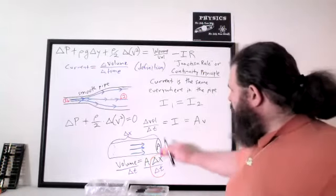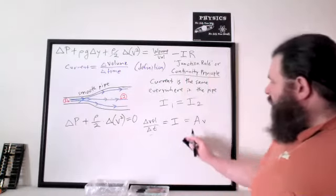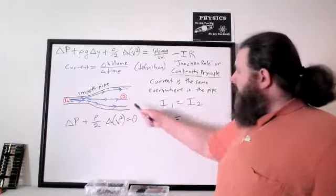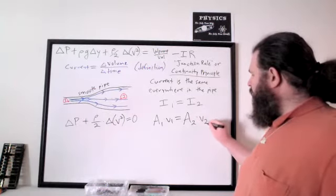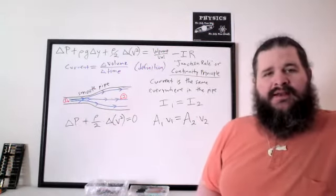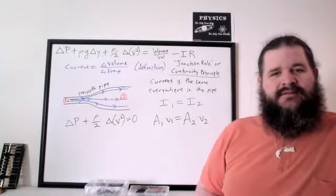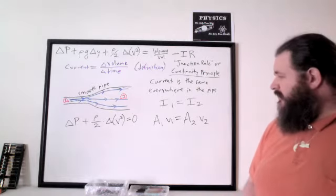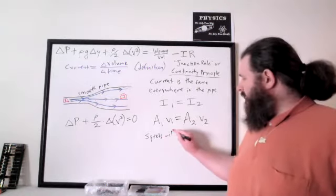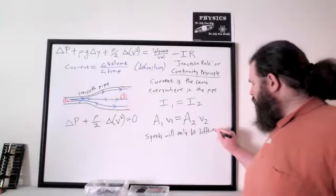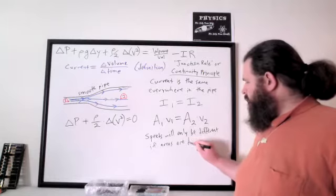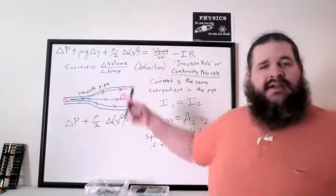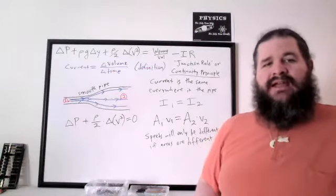If we rewrite every current as area times speed, then current one equals area one times speed one, and current two equals area two times speed two. The only way for the speeds to be different is if the areas are different. Which means if you're comparing two locations with the same cross-sectional area, you know the kinetic energy density term can be ignored — it's moving, but at the same speed at both locations.